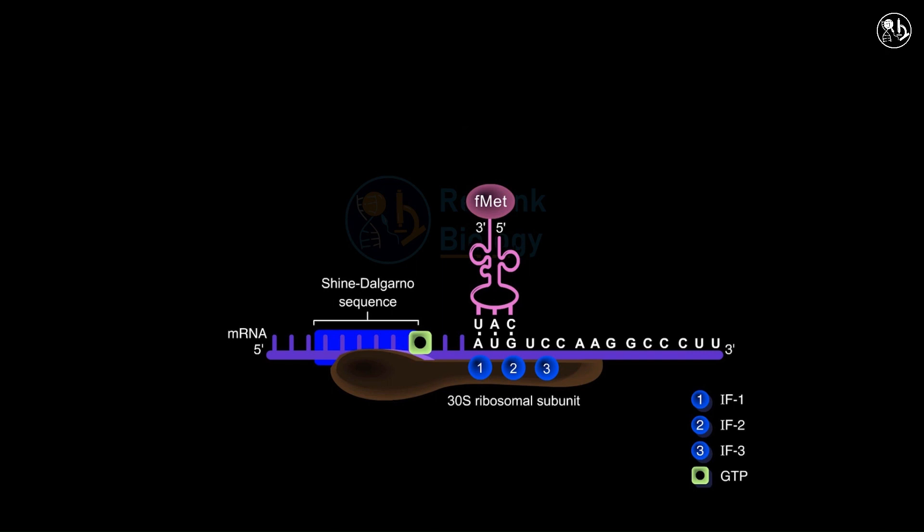When first fMet tRNA binds to mRNA, IF3 is released and the remaining assembled components are called the 30S initiation complex.